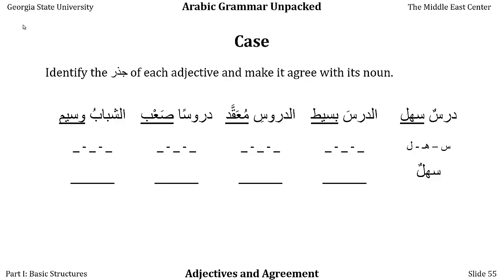If we say addars and want to use the adjective basit — simple — we want to make 'the simple lesson.' Dars is masculine, singular, in the mansub or accusative case, as we know from the fatha. To make basit agree in definiteness, we add alif-lam; to agree in case, we add the fatha: albasita. So addars albasit, the simple lesson. Notice we swallow up the alif and alif-lam where possible, making words run together.